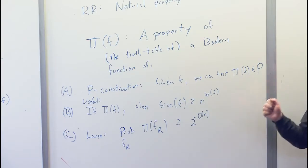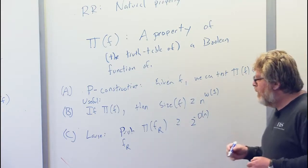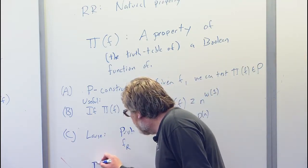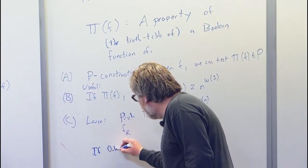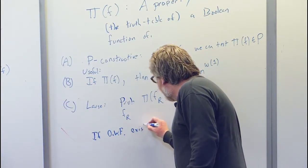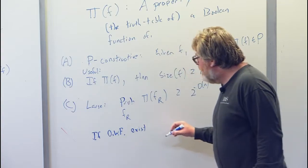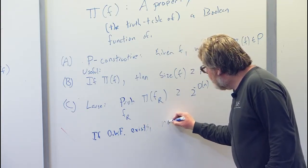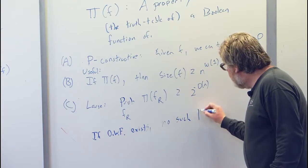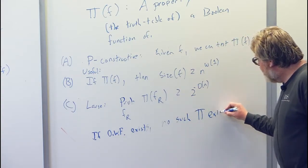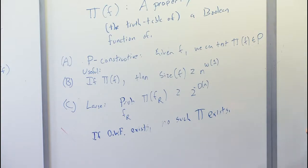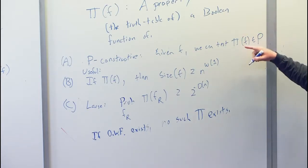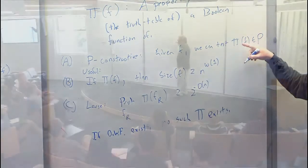They did two remarkable things. The first is they observed that if one-way functions exist, then we can test whether the property holds in polynomial time. The question is whether we can test if the property is in polynomial time — yes, we can test in P whether pi holds.